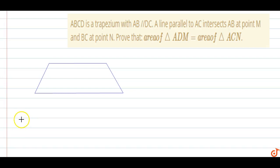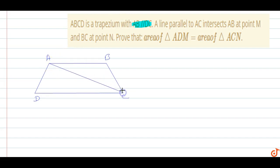In this question, ABCD is a trapezium with AB parallel to CD. We will draw a line MN parallel to AC, intersecting AB at M and BC at N. We need to prove that the area of triangle ADM is equal to the area of triangle ACN.